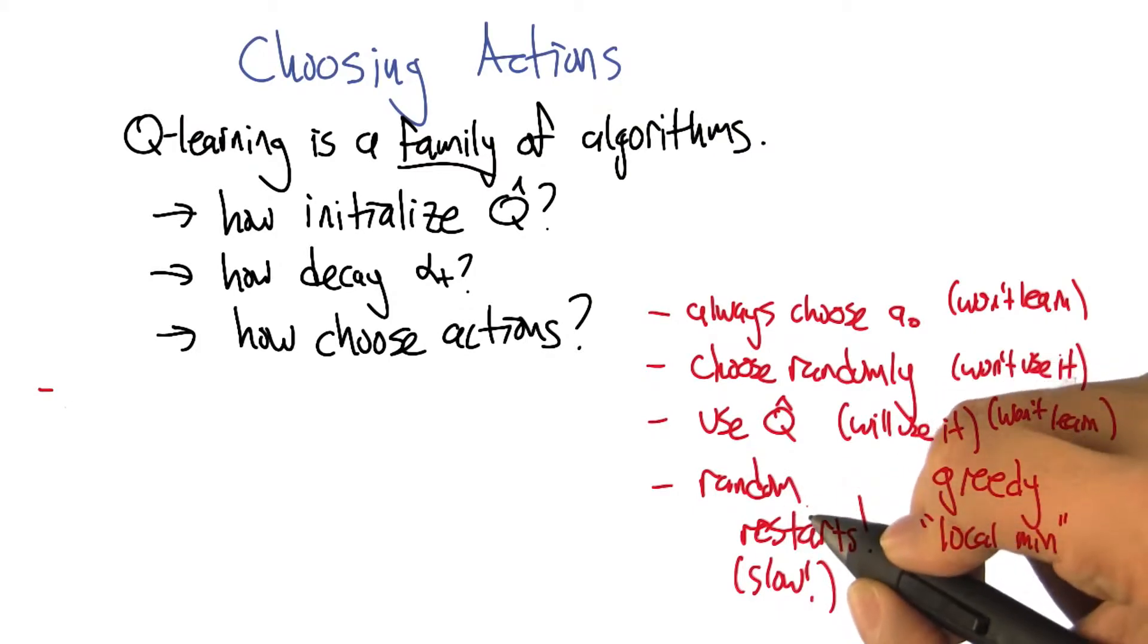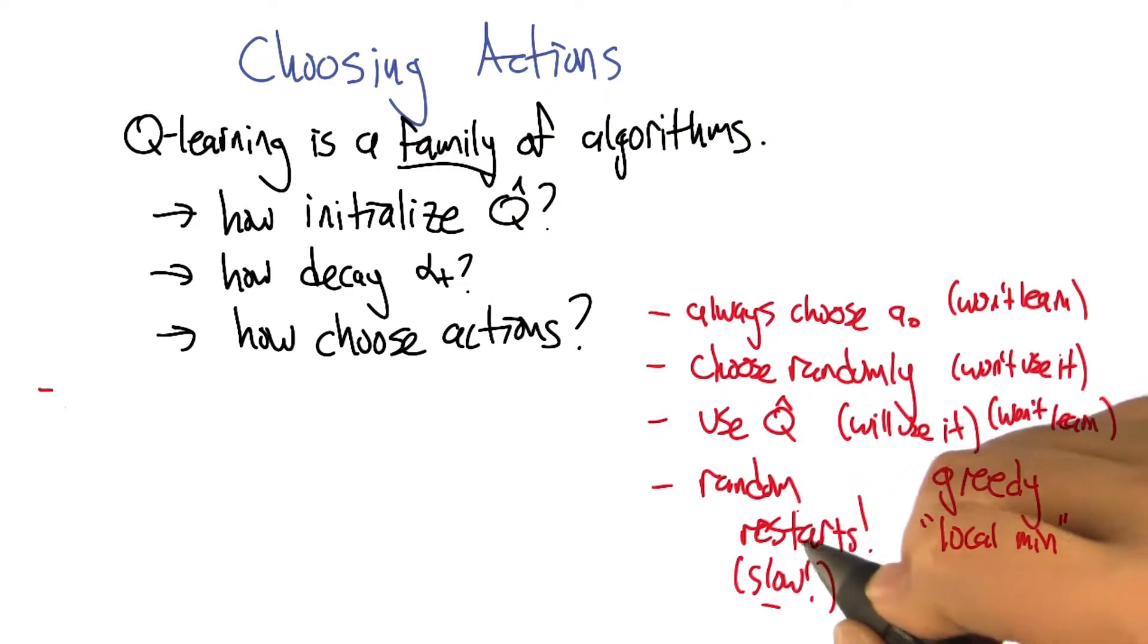So random restarts was one idea that we had when we were talking in optimization about getting unstuck, which is let yourself get stuck, and then once you realize you're stuck, throw everything out and start over again. Right. And you're right, that's going to end up being really slow.